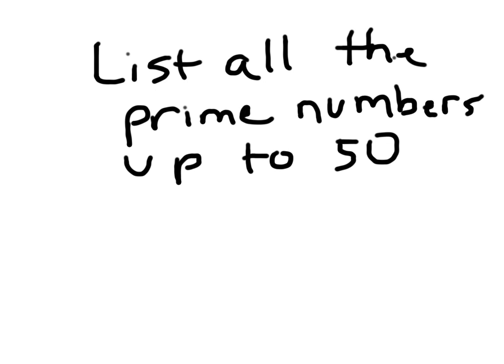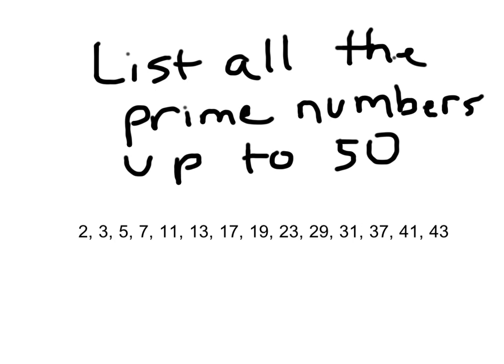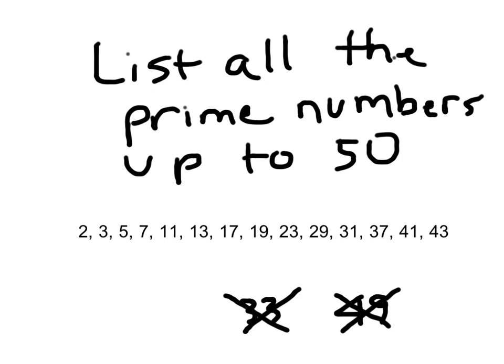What did you come up with for those prime numbers up to 50? One number you might have listed by accident is 33 — but 33 is divisible by 3, since 3 times 11 is 33, making it composite. You might also have written 49, but 7 times 7 is 49, giving it factors 1, 7, and 49 — three factors, so not prime. And remember, the only even prime number is 2. Thanks for joining us today.